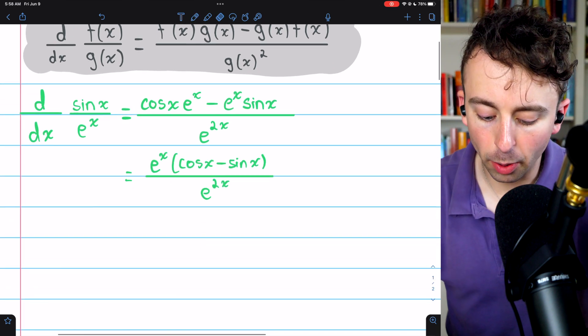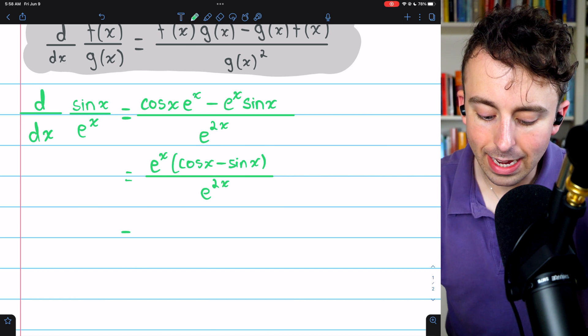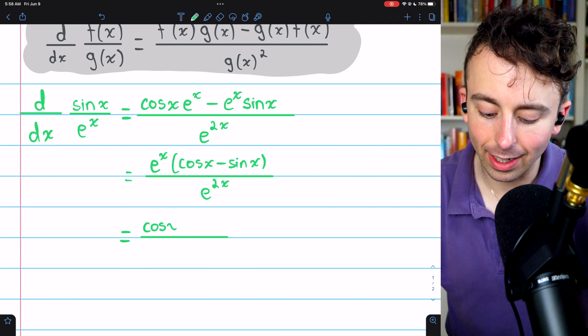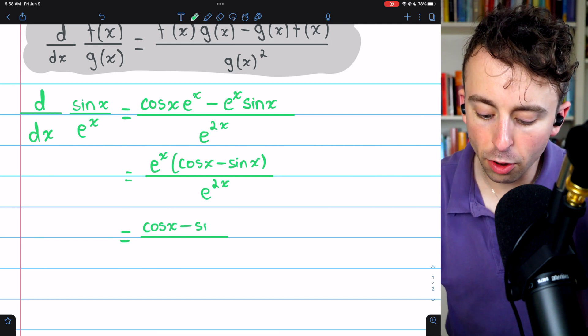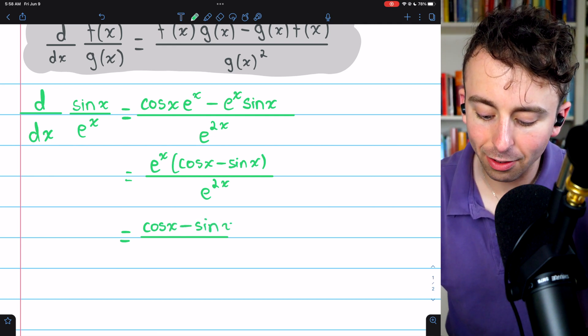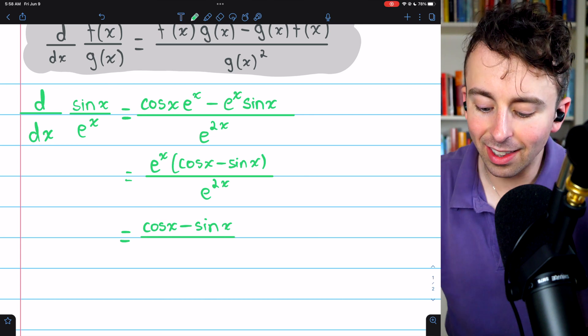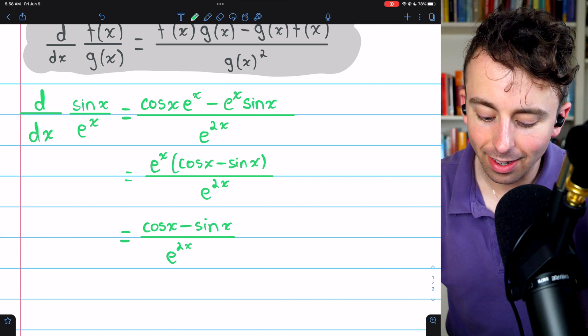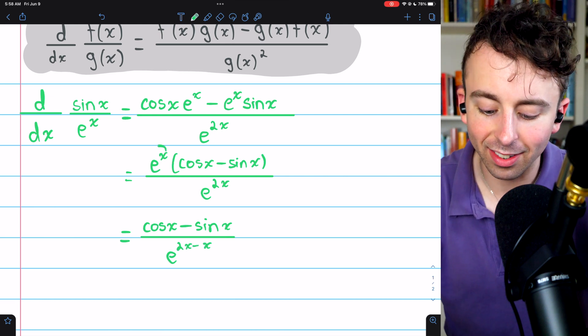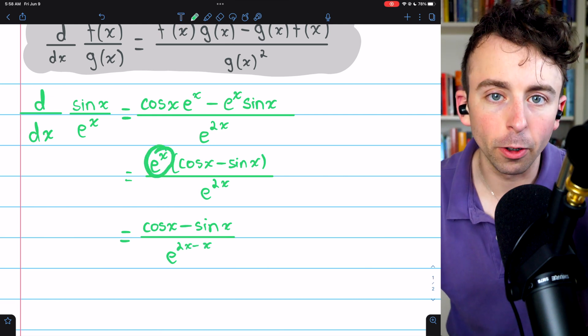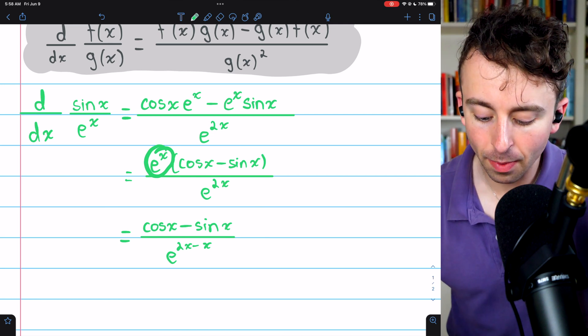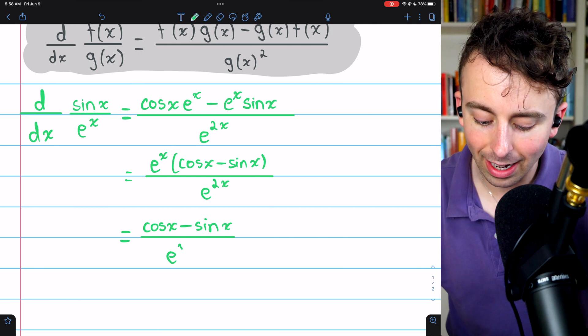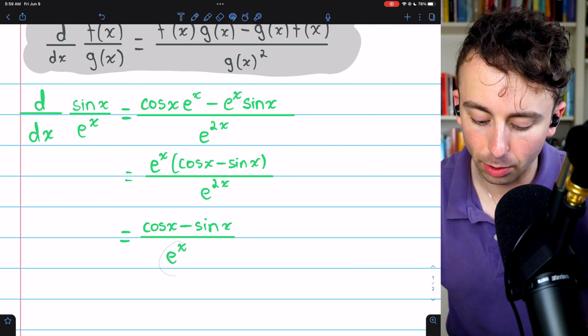And finally, by our exponent laws, we can move the e to the x that's in the numerator to the denominator by just subtracting the exponents. So in the numerator, we'll just have cosine x minus sin x, and in the denominator, we'll have e to the 2x minus x, because we brought this e to the x in the numerator down. Now that's just exponent laws. e to the 2x minus x, of course, is just e to the 1x.